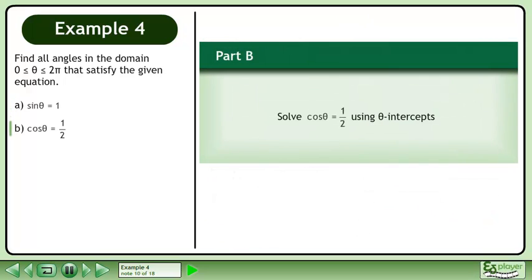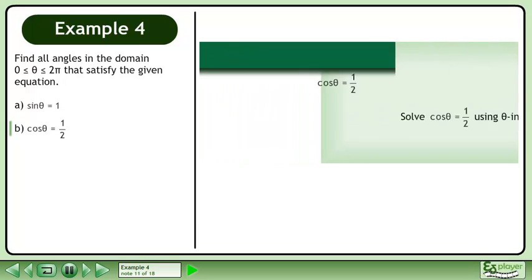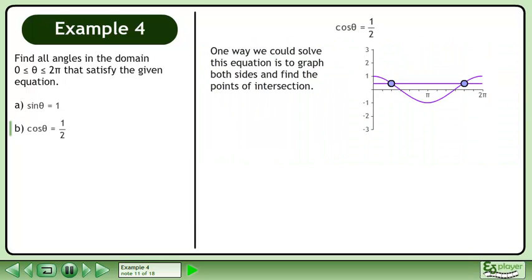In part b, solve cosθ equals 1 half using θ-intercepts. One way we could solve this equation is to graph both sides and find the points of intersection. The points of intersection occur at π over 3 and 5π over 3.